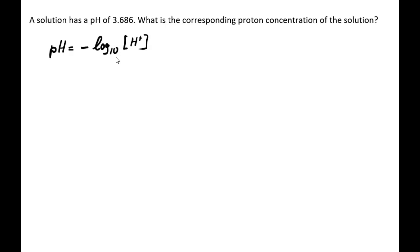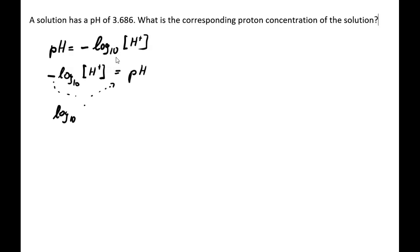We are looking for the proton concentration, so we can write this equation the other way around. We can write this as: negative log₁₀ of the proton concentration equals the pH. Bringing the negative sign to the other side gives us: log₁₀ of the proton concentration equals negative pH.